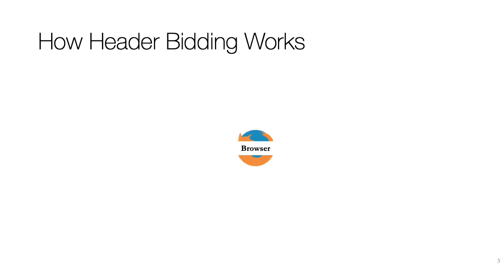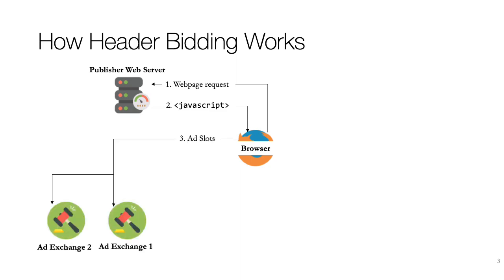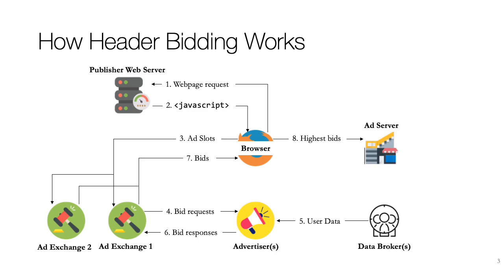In contrast to this, header bidding places the browser at the center of the process. The start is the same — the browser contacts the publisher's web server and the web server sends a response. But in this response, there's special JavaScript that tells the browser to contact one or more ad exchanges in parallel. So the browser, instead of going to the ad server, is directly going to the ad exchanges. The real-time auctions at these exchanges are the same as before. One or more advertisers are requested for bids. They collect tracking information on the user and send bids back to the exchanges. And then those exchanges forward these bids to the browser.